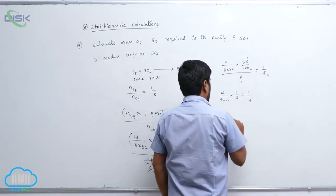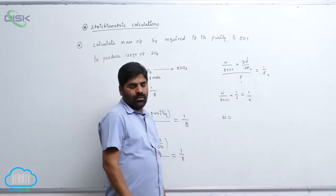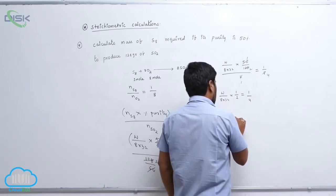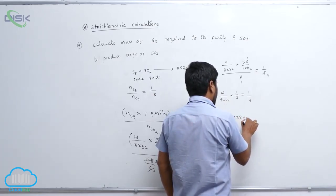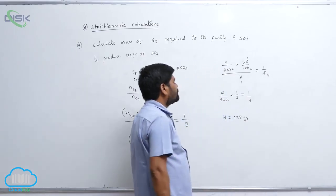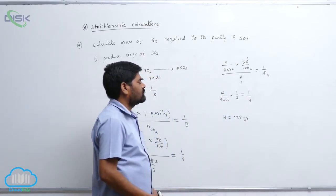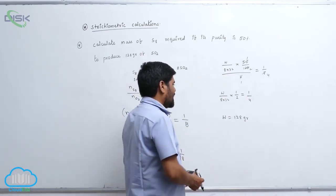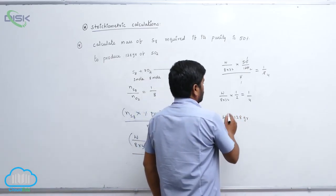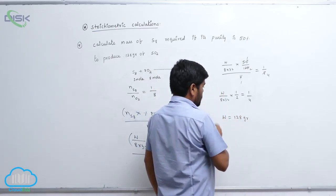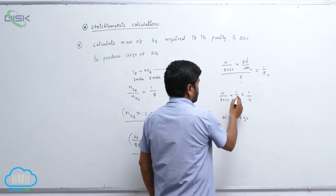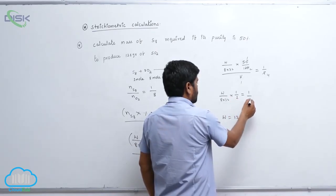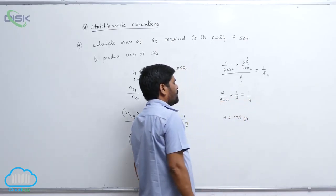So therefore, W equals to how many grams? 128 grams. 8, 8 both are cancelled. This is 1, this is 1, this is 2, this is 4.